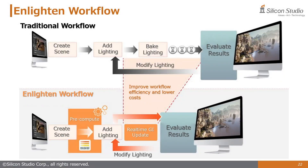The second advantage is the ability to quickly iterate on lighting adjustments. Once the scene is precomputed, artists can quickly receive feedback when editing light parameters in the editor. Enlighten immediately reflects changes in indirect lighting, allowing for easy modification of light parameters and a faster workflow. Customers of Enlighten have praised it for allowing extra time for other tasks that was previously spent on lighting adjustments, which has led to an overall increase in quality.